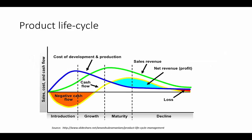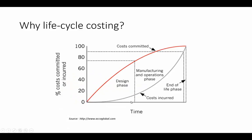Product life cycle costing is closely linked to the product life cycle. There's introduction, growth, maturity and decline, where we start off with negative cash flows and high costs, and we only tend to see profits taking place later on in the product life cycle.